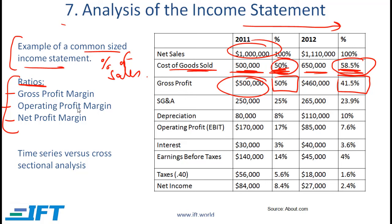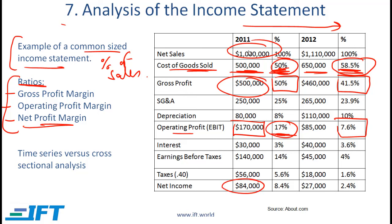The operating profit margin is essentially the operating profit or EBIT divided by sales. The operating profit margin is 17% in 2011 and down to 7.6% in 2012, so that also is a negative trend. Net profit margin is the net income divided by net sales, and notice that that number is going down also.